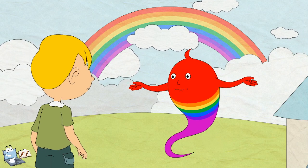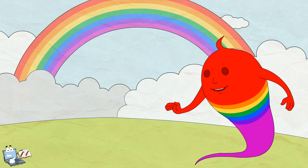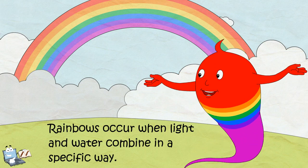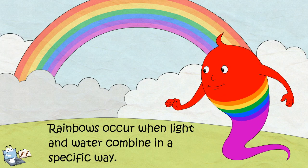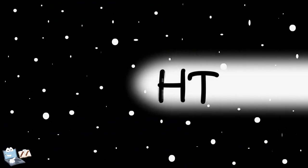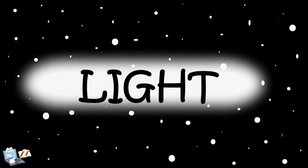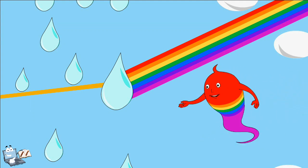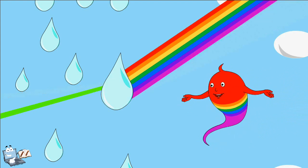Now what are you thinking, Tim? I was thinking about how a rainbow is formed. Rainbows occur when light and water combine in a very specific way. When a beam of sunlight comes down to earth, the light is white. This white light contains all the colors of a rainbow, and these colors will separate if the light beam happens to hit raindrops on the way down at a particular angle.